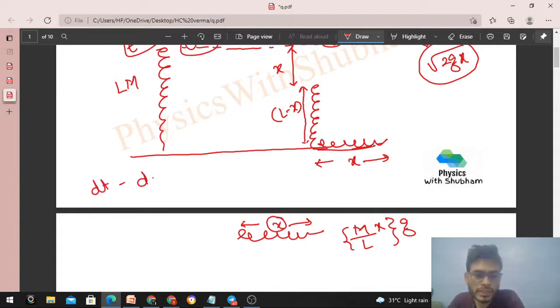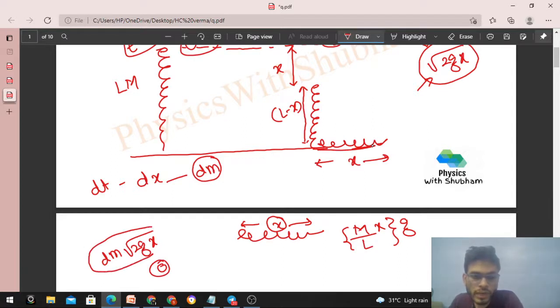Kyo ki dhekho, chain joh hai woh continuously niche aa rahi - means ye joh x hai na, ye continuously increase karate ja raha hai. Iska matlab dt time me ek length or add ho jayegi jiska length dx hooga aur jiska mass dm hooga. So joh dm mass hai uska momentum change ho jayega. Aap dhekho initially agar main dm mass ke momentum ki baat karu, so woh bhi under root 2gx se move kar raha tha, so uska momentum kitna hooga? dm into under root 2gx. But finally jab woh ground ko hit kar jayega ya phir floor ko hit kar jayega toh final momentum uska zero ho jana.